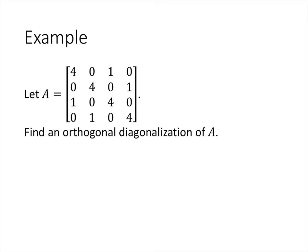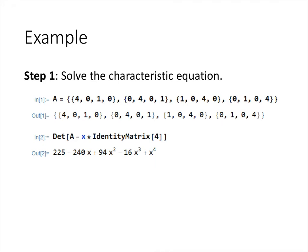Let's take a look at an example. Here's a symmetric matrix — the entries on opposite sides of the diagonal are equal, so taking its transpose gives back the same matrix A. Since it's symmetric, it must be orthogonally diagonalizable. We want to find matrices P and D such that A equals P D P transpose. We're going to use Mathematica to make our job easier, especially since the Gram-Schmidt process is very tedious with a lot of calculation steps.